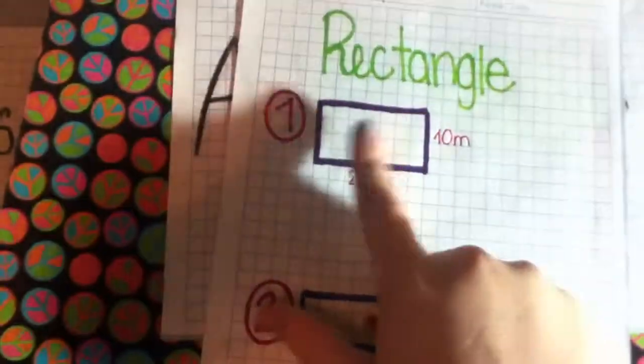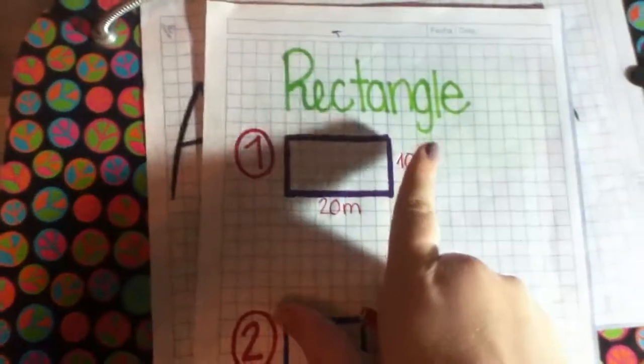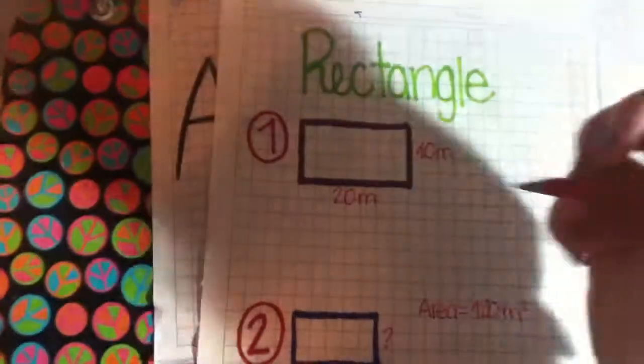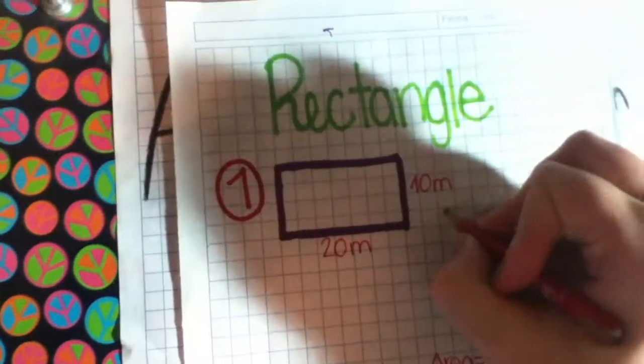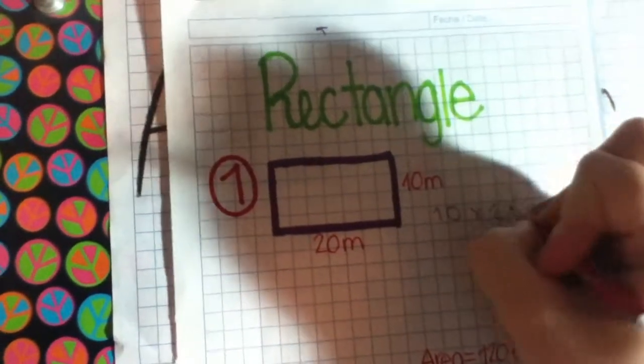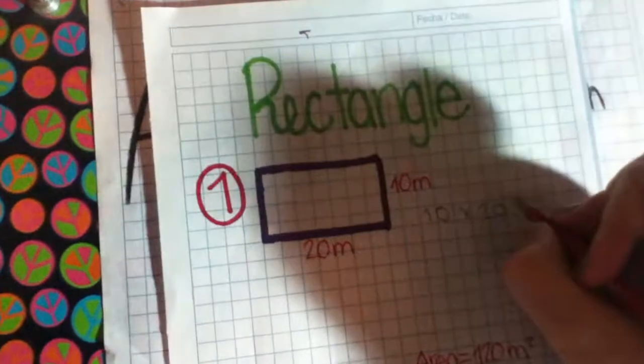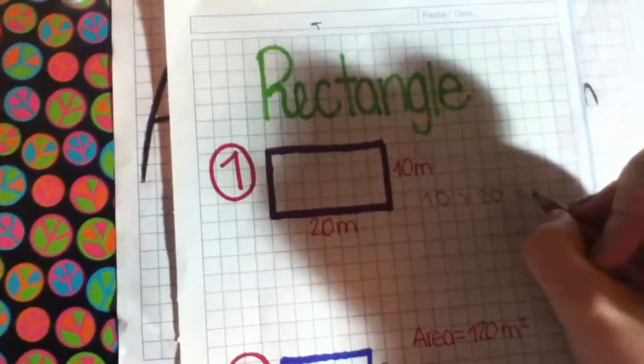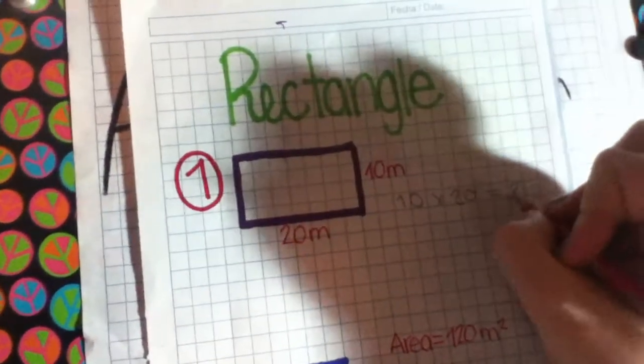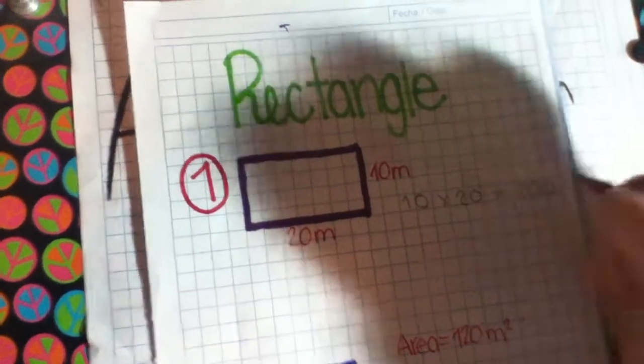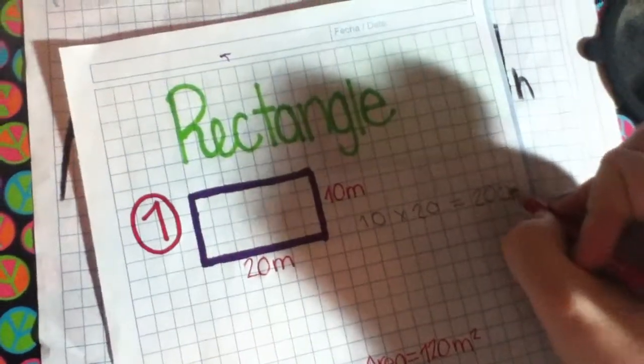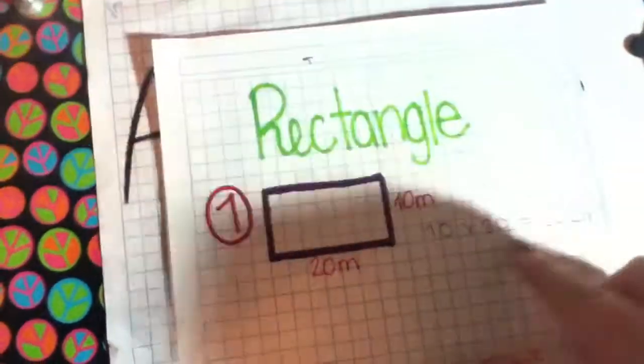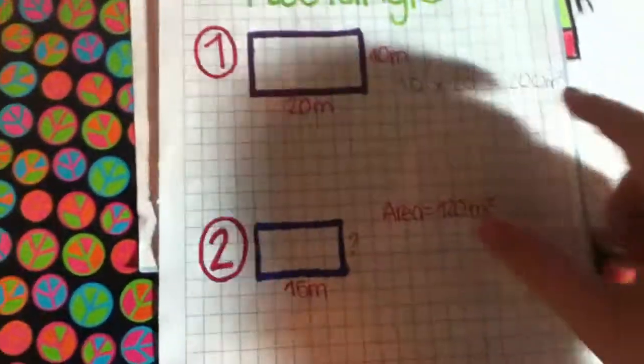So here we need to find the area. So we multiply 10 times 20. And for an answer, we get 200 square meters.